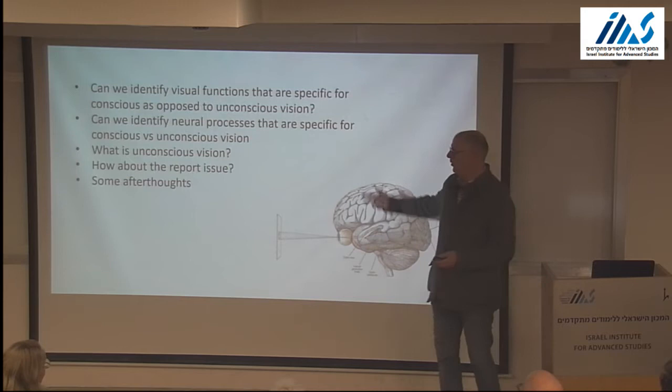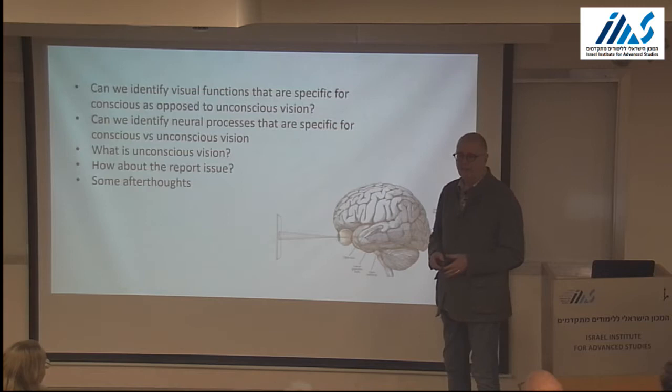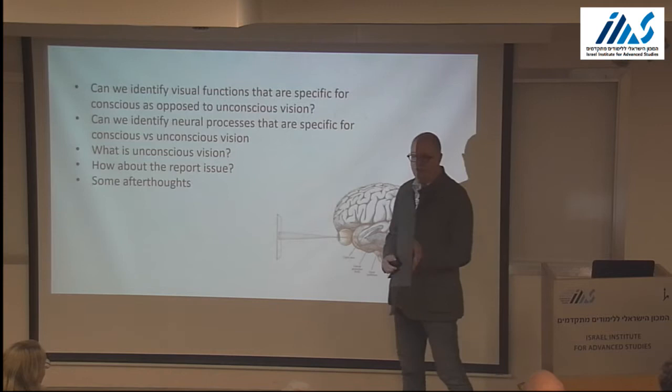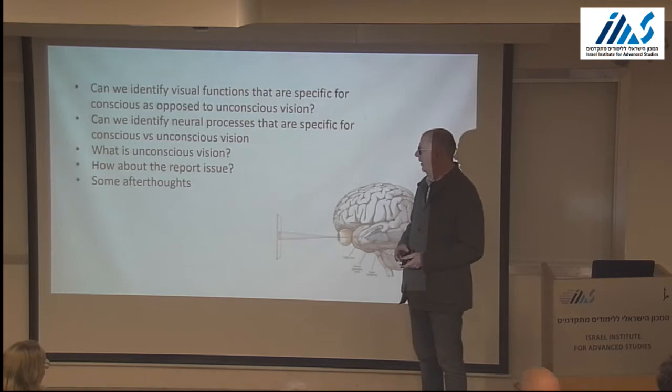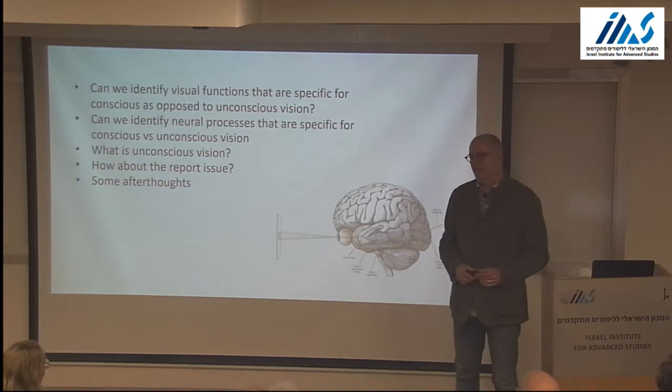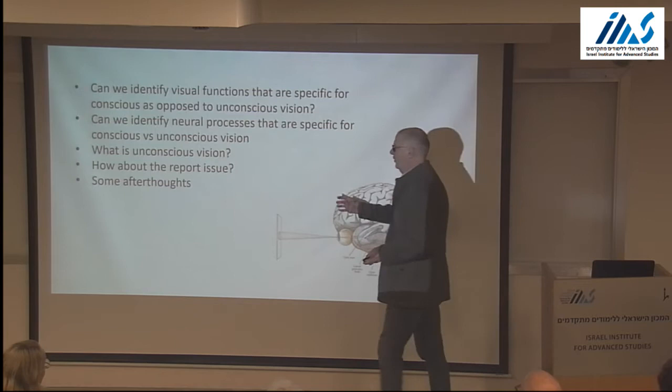Is it possible to identify particular functions that mark this transition? And can we identify neural processes that go along with this transition? When we talk about such a transition, we should also ask what exactly is unconscious vision — there's a lot of debate about that recently, regarding objective visibility, subjective visibility, and things like that. And we should also talk about the report issue and have some afterthoughts.